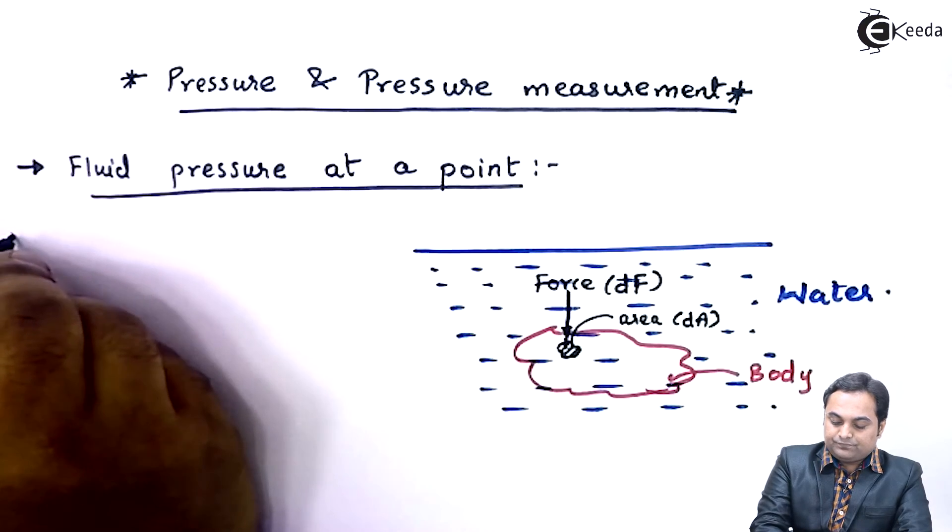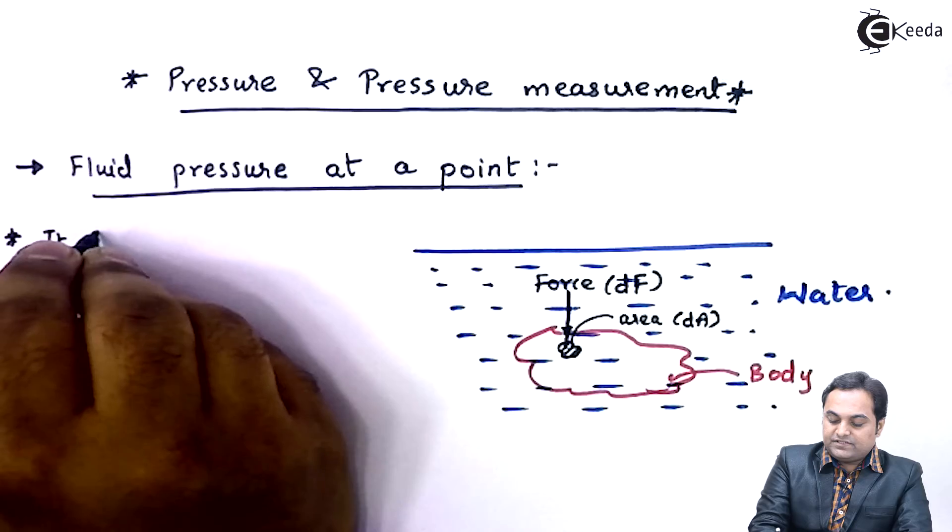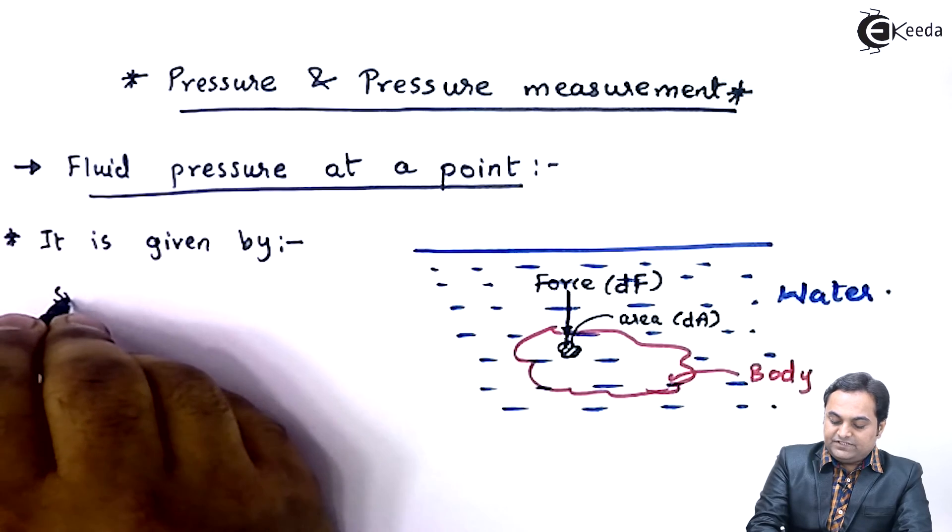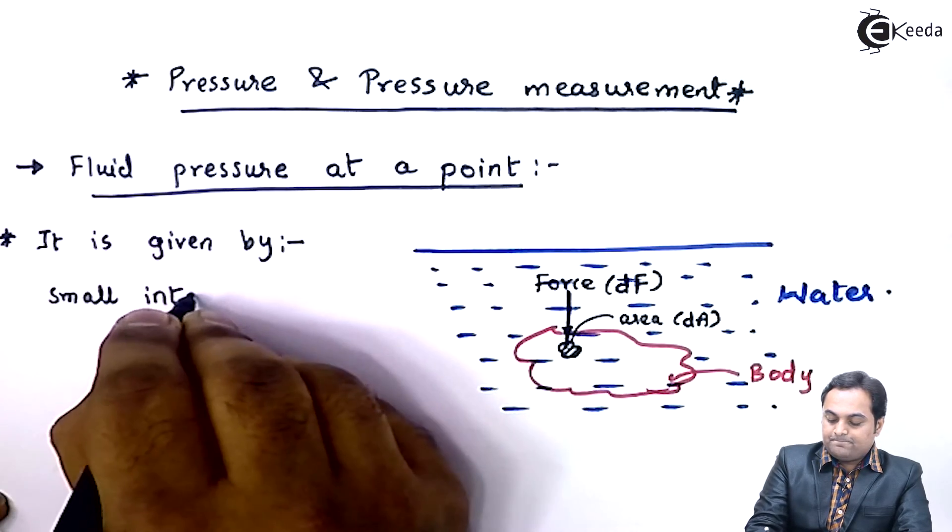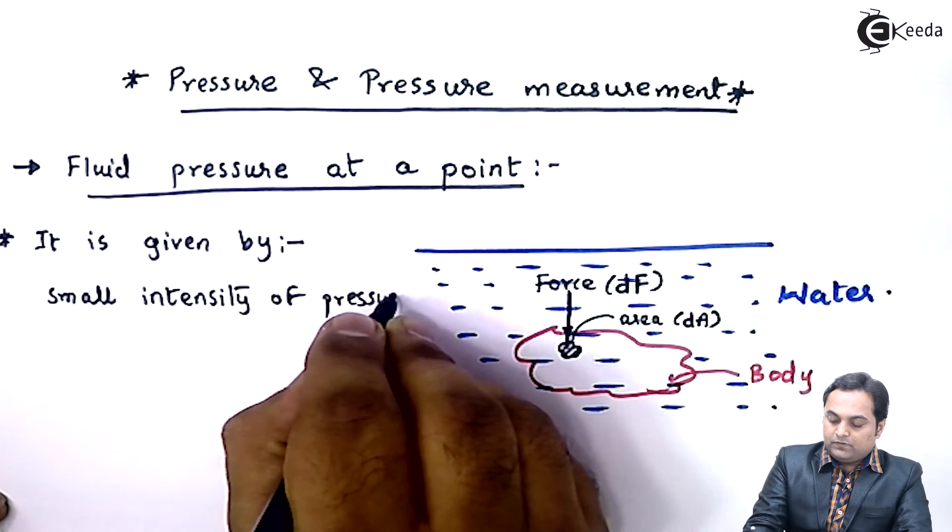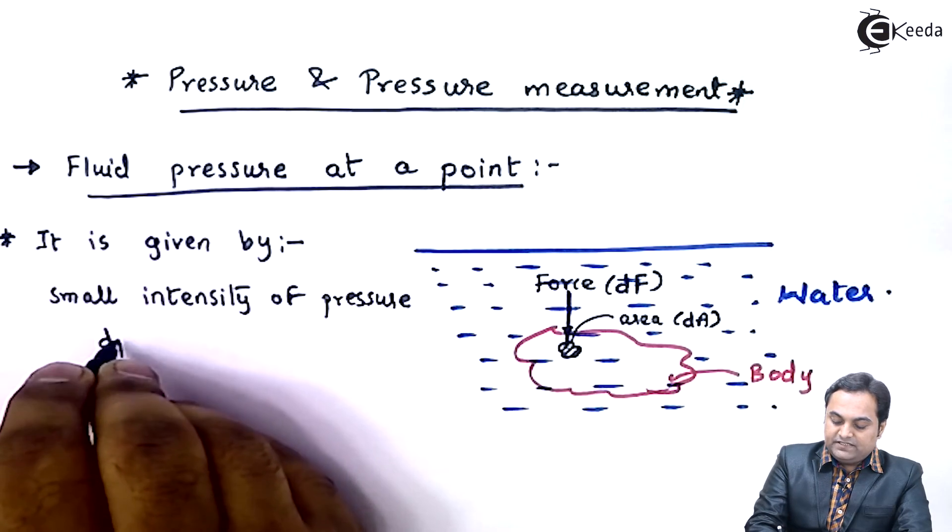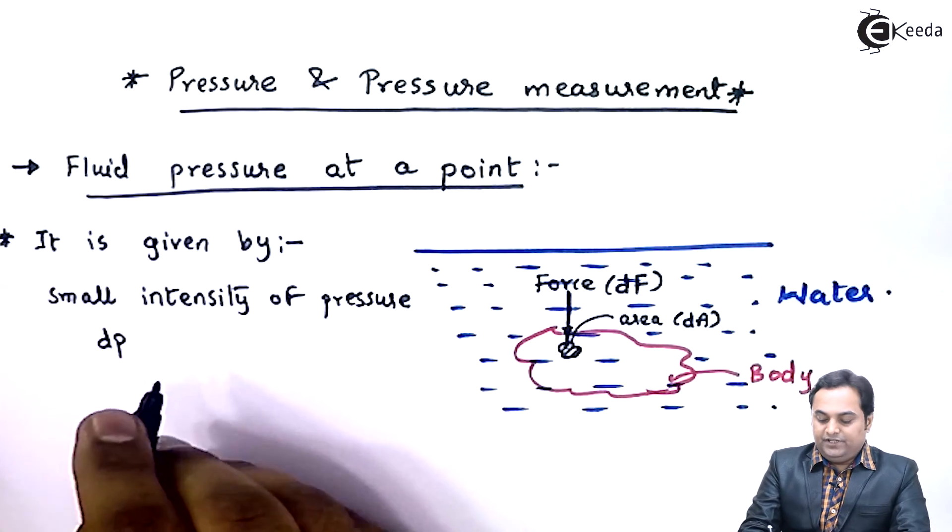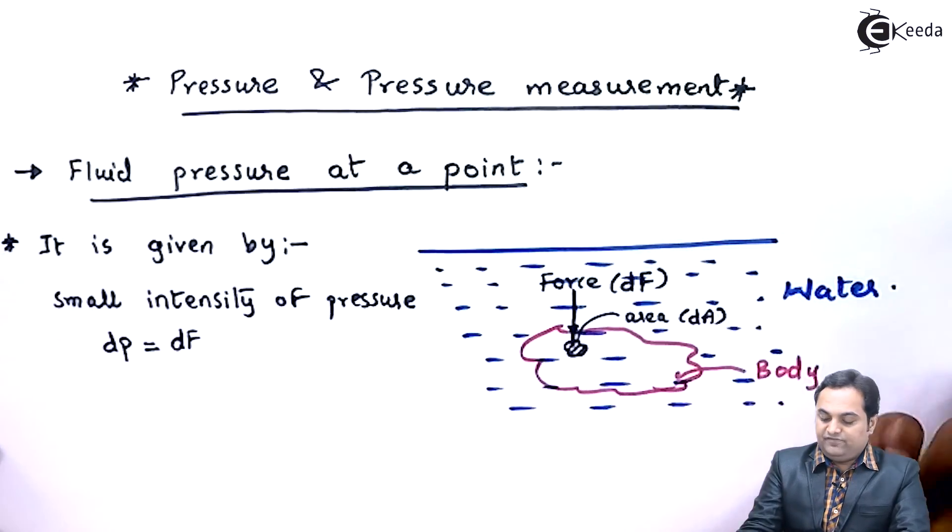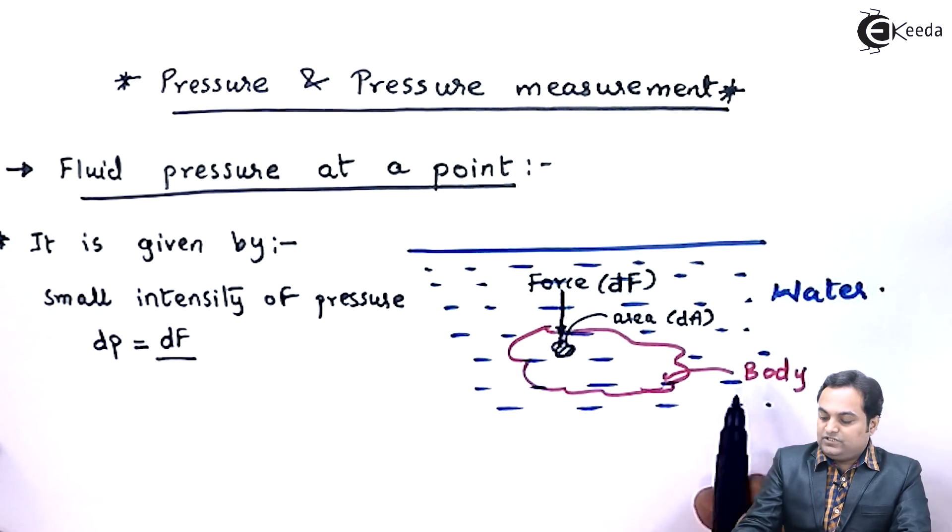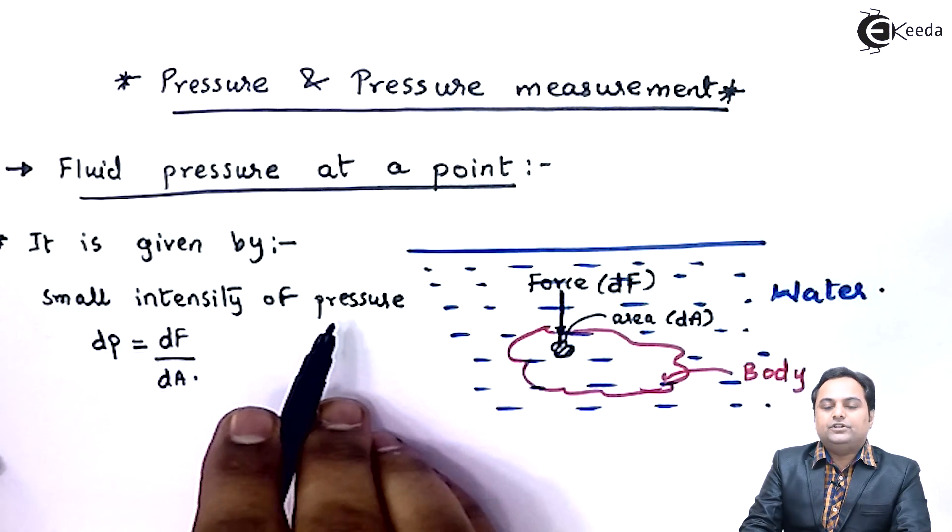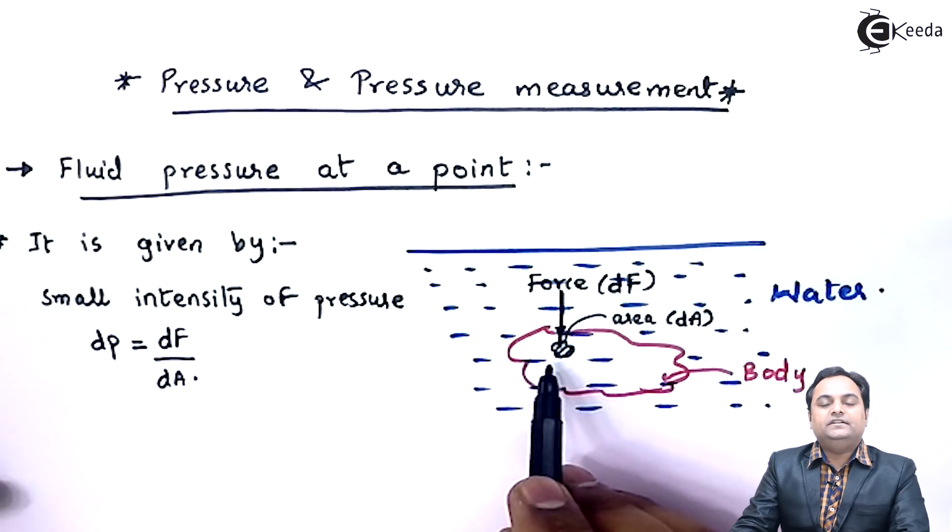Finally, the fluid pressure at a point, it can be said that it is given by small intensity of pressure. Small intensity of pressure that will be denoted by dp. Small intensity is equal to small amount of force which is dF divided by small amount of area that is dA. So this is the small intensity of pressure which is acting on small area dA.